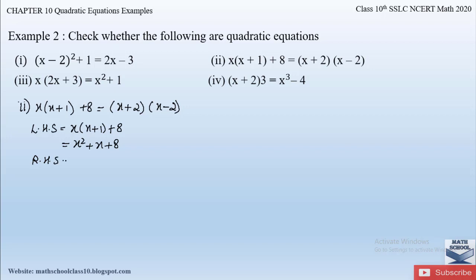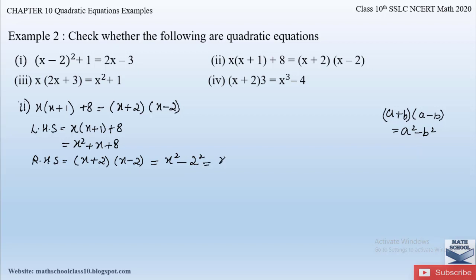For the right-hand side, (x + 2)(x − 2) is of the form (a + b)(a − b) = a² − b². Here a = x and b = 2, so this gives x² − 2² = x² − 4. This is the simplified right-hand side.